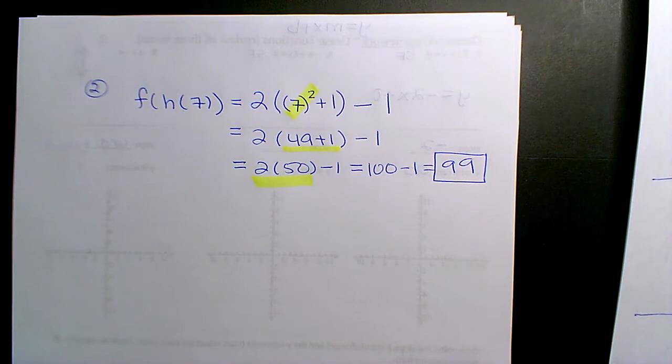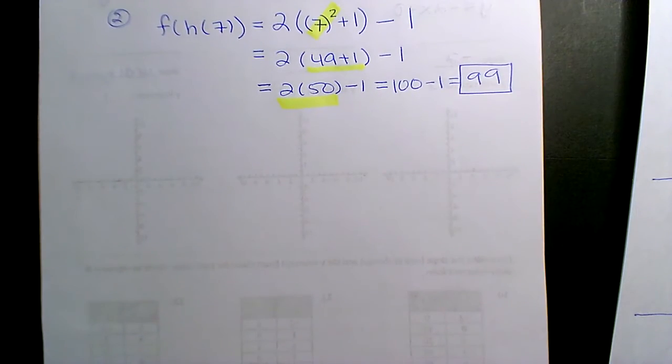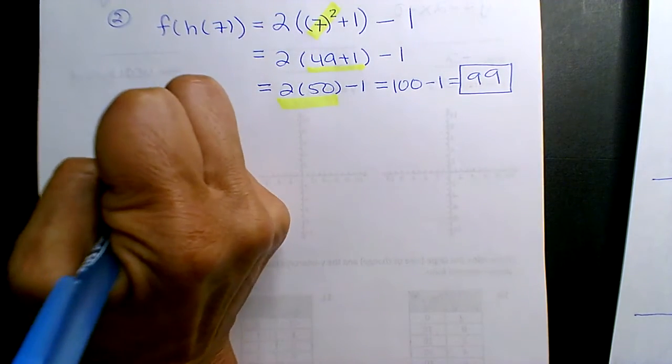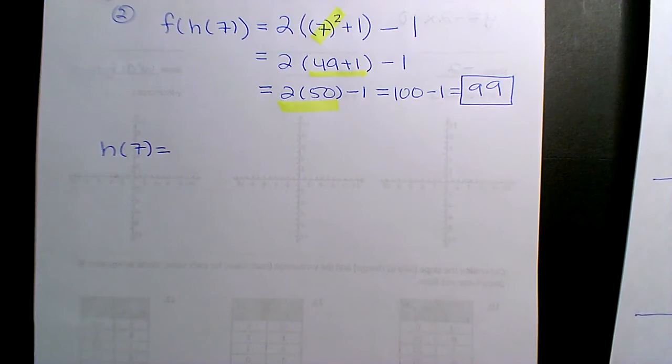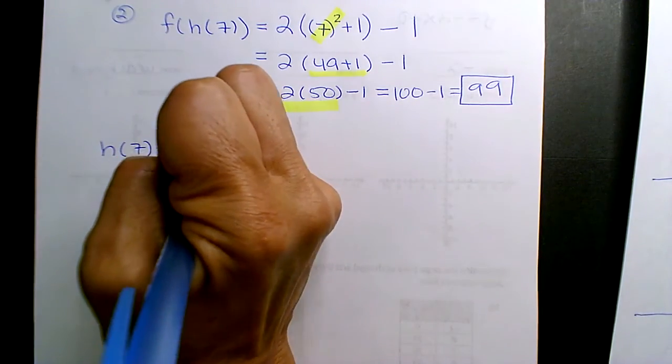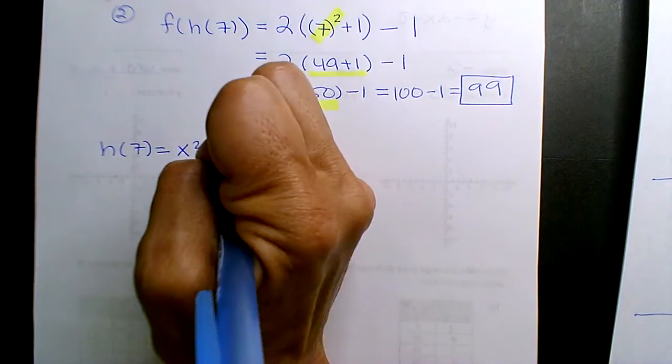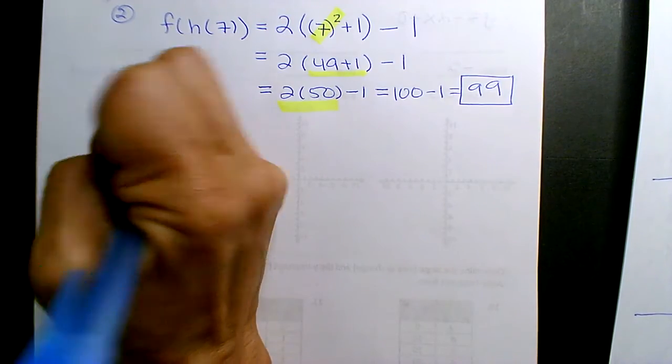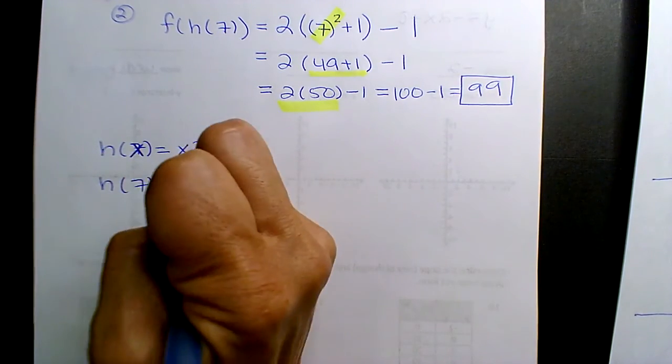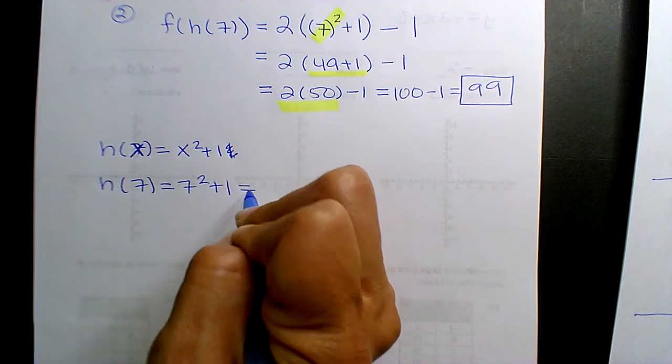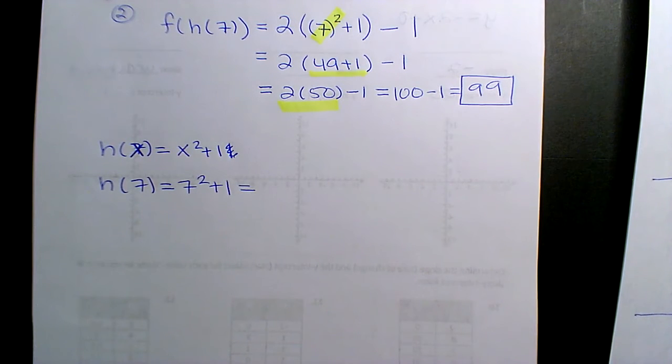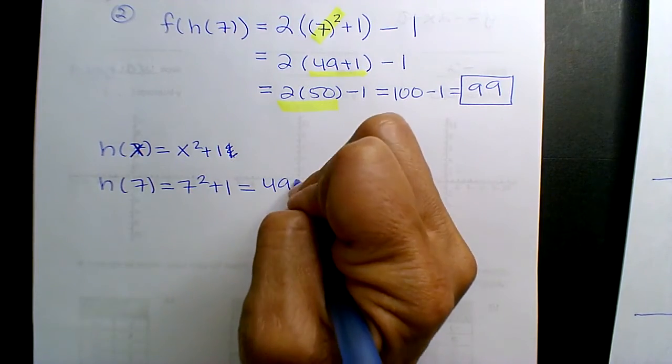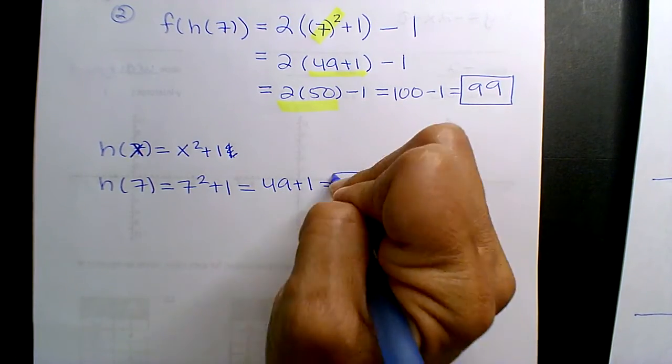Now if you want to do it separately, you would take h of 7 first. The h of x function is x squared plus 1. Oh wait, I put an extra one, that should be an x. So if I want h of 7, 7 squared plus 1, it's just substitution. Input-output: when you put this number in, what do you get out using correct order of operations? So 49 plus 1 is 50.